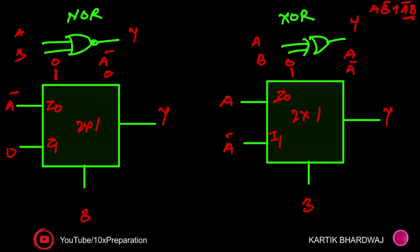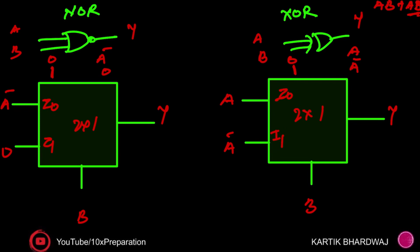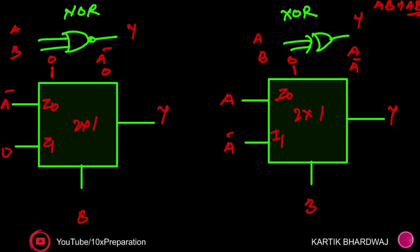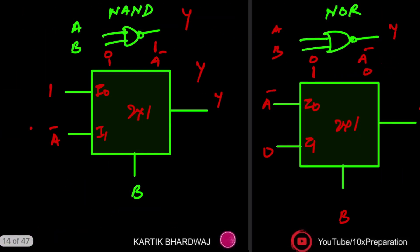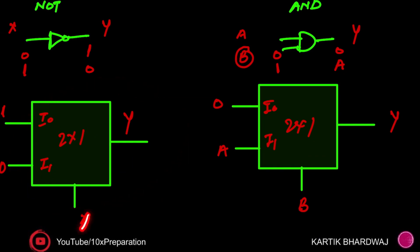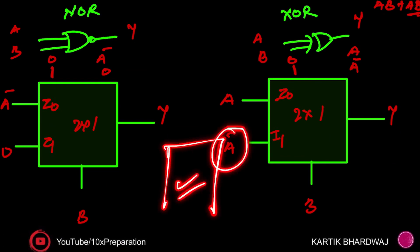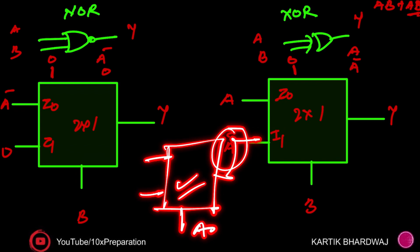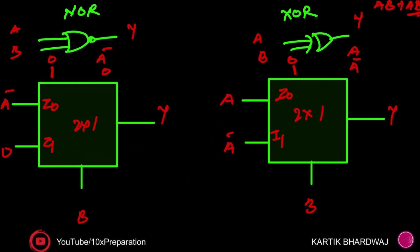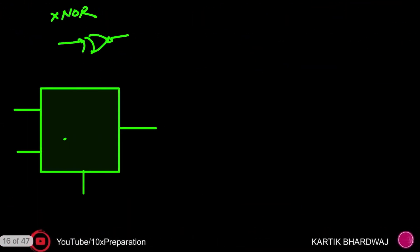Whenever you get confused, go back to basics — write down the equation, try all values, and you will get the answer. One more thing: if a-bar is required, you need to implement a NOT gate before feeding into the MUX. So you put a NOT gate circuit first — input a goes in, complement comes out — and connect it appropriately. It depends on what the interviewer is expecting, so be careful.